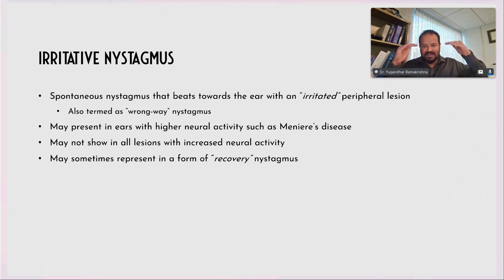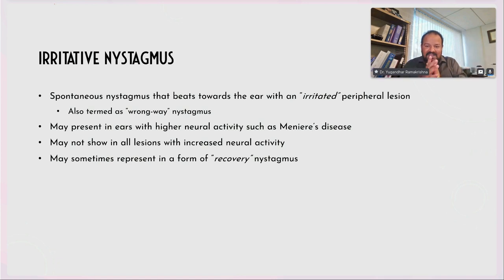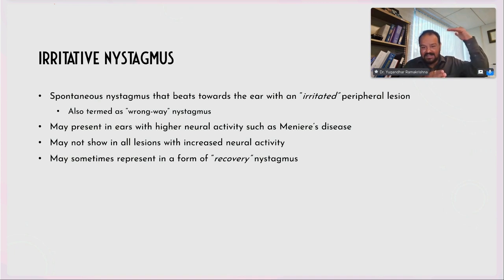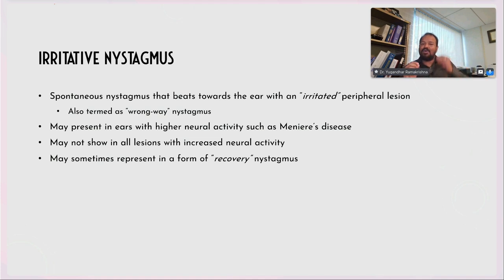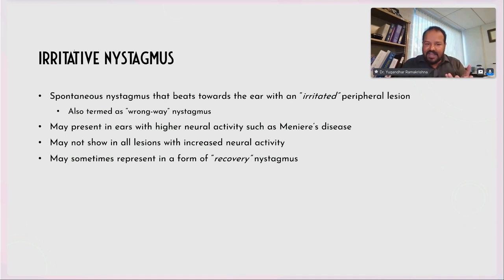As this compensation happens, sometimes the affected function can actually outperform the normal-functioning ear. During this phase, what I earlier said — that right-beating nystagmus indicates the better-performing side — may not hold true. Because at the vestibular nuclear level during the compensation phase, the affected side can actually have better performance. So the beating can actually shift to the opposite side — in this case, to the left side. You have to grab the information, but you cannot conclude. If you understand this, you go back to the client and ask more questions — that really helps in proper diagnosis. This is called recovery nystagmus.